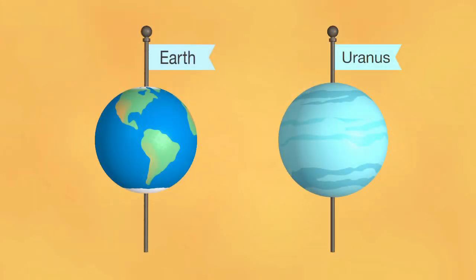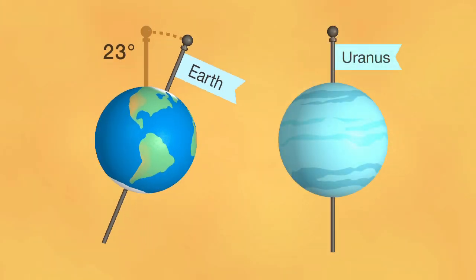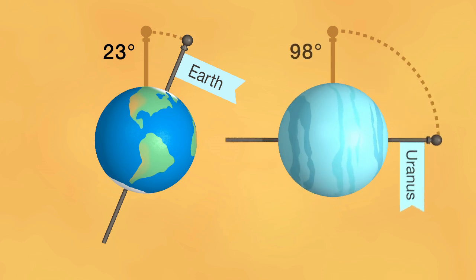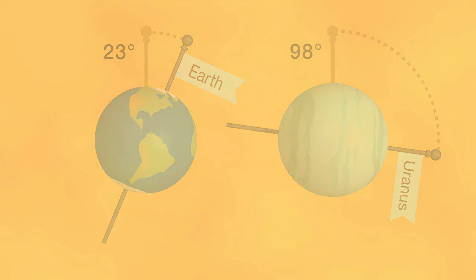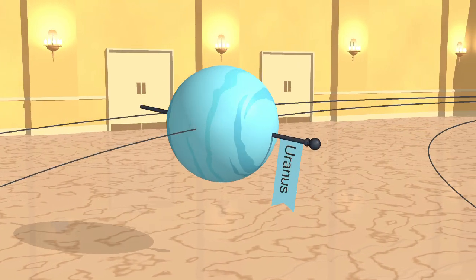While Earth's axis is tilted about 23 degrees, Uranus tilts almost 98 degrees. Uranus's axis is so tilted, it actually looks like the planet is rotating on its side.